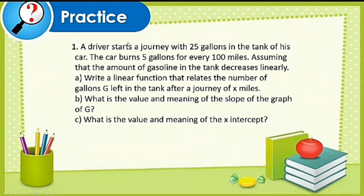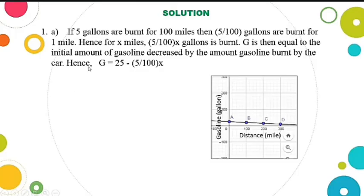A driver starts a journey with 25 gallons in the tank of his car. The car burns 5 gallons for every 100 miles. Assuming that the amount of gasoline in the tank decreases linearly, write a linear function that relates the number of gallons G left in the tank after a journey of x miles. What is the value and meaning of the slope of the graph of G? And what is the value and meaning of the x-intercept?